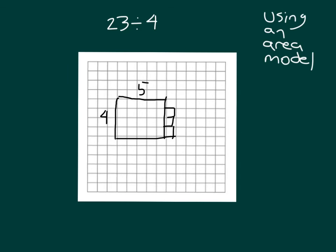So again, that's 23 divided by 4 is equal to 5, with the remainder of 3.